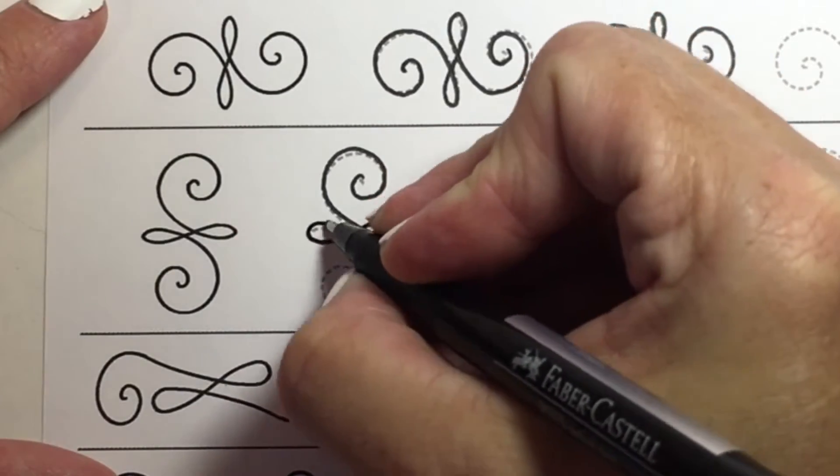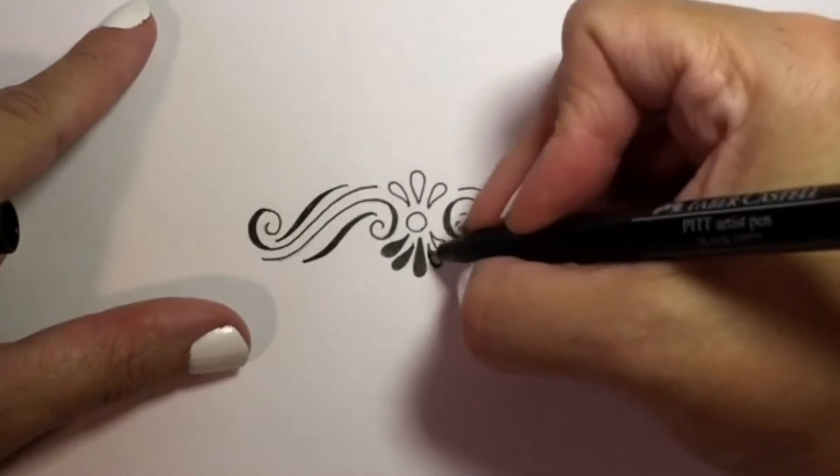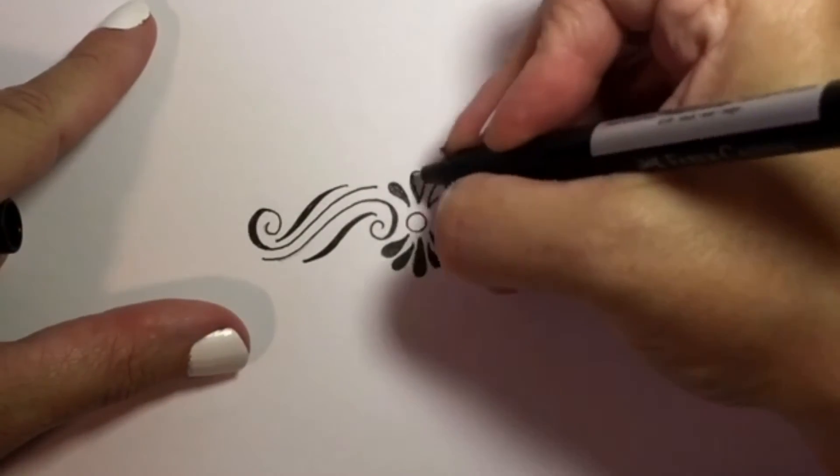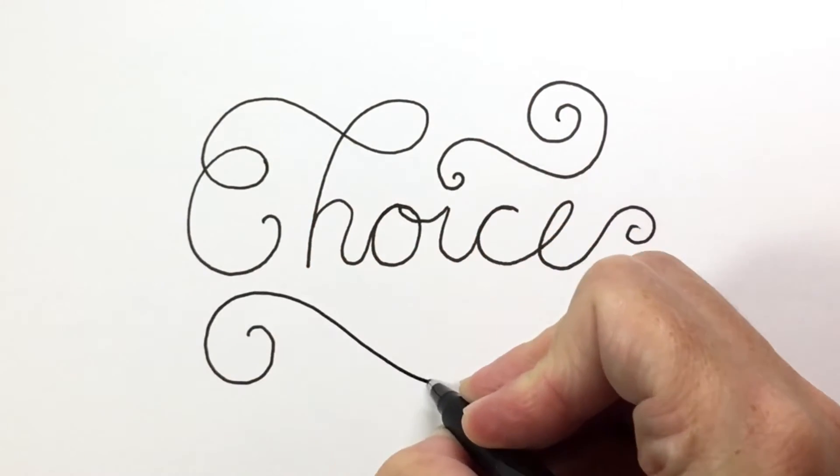We'll explore simple flourishes, techniques for achieving symmetrical flourishes, and ideas for some ornamental flourishes. I'll also show you some simple ways to add flourishing to your lettering.